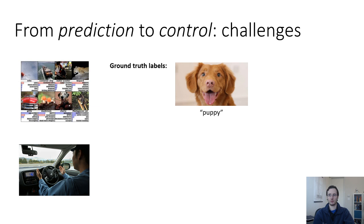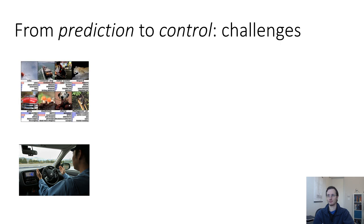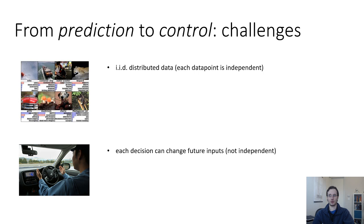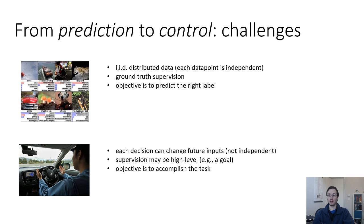Another assumption that we usually make when we're solving prediction problems is that we know the ground truth labels. So, for example, we might be given a picture, and that picture is labeled as puppy, and the task for our model is to learn to predict the label puppy. In control, we might be given more abstract goals. For example, our learning system might be told, drive to the grocery store. But drive to the grocery store is not what the system should output. It's not supposed to output the phrase drive to the grocery store. It's supposed to output steering commands for a car that will actually cause it to drive to the grocery store. So you can say, well, what steering command is that? Your method needs to figure that out. So your goals are more abstract. In summary, prediction problems have IID-distributed data, where each data point is independent. Control problems, each decision can change future inputs. They are not independent. In prediction, we have ground truth supervision. In control, supervision may be high-level, in the form of a high-level goal. In prediction, the objective is to predict the right label. In control, the objective is to accomplish the task.